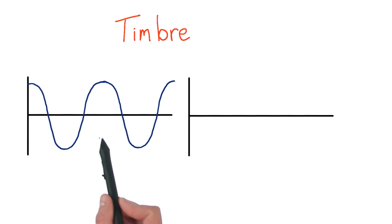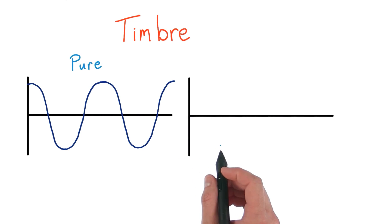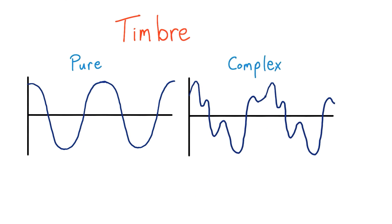What I mean by that is like this — this is what we would call a pure wave. But some waves are complex, like this one, and it's this complexity that allows us to perceive a wave's timbre. I think this makes sense, but it's a lot of information — let me make sure I understand.